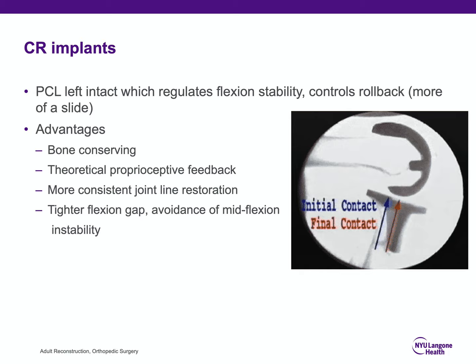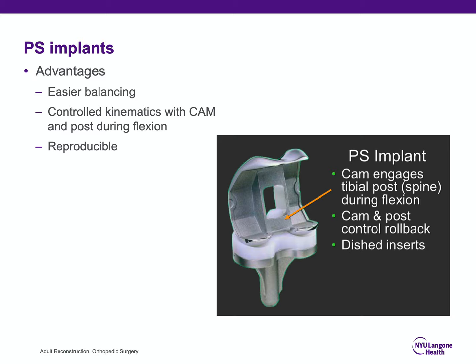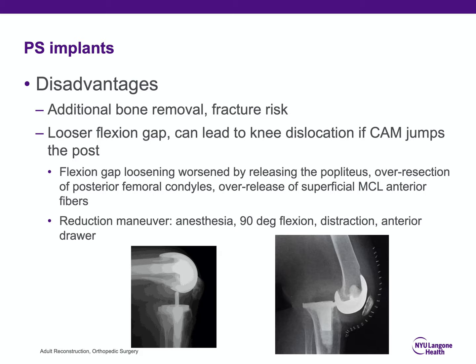CR implants leave the PCL intact to regulate flexion space and theoretically control rollback. Advantages: bone conservation, proprioceptive feedback from PCL, more consistent joint line restoration, and a tight flexion gap without mid-flexion instability. PS knees sacrifice the PCL; advantages include easier balancing and a cam-post mechanism for better rollback control. Disadvantages: more bone removed for the box (fracture risk), looser flexion gap, and risk of knee dislocation if the cam jumps the post.